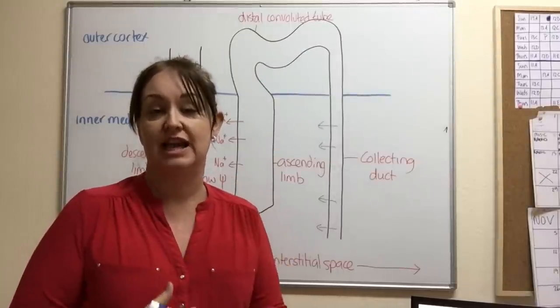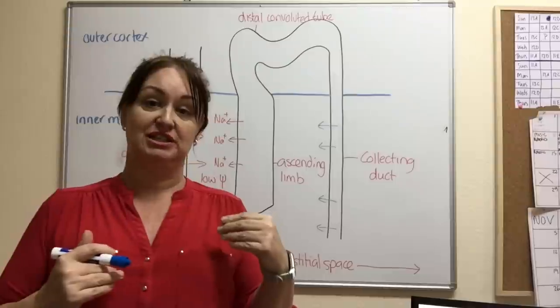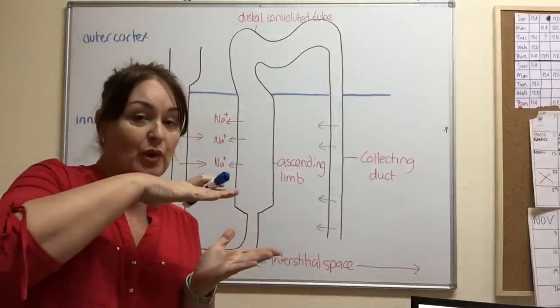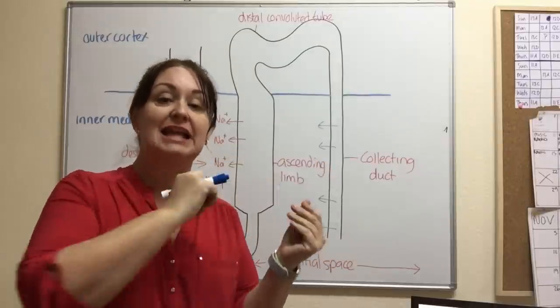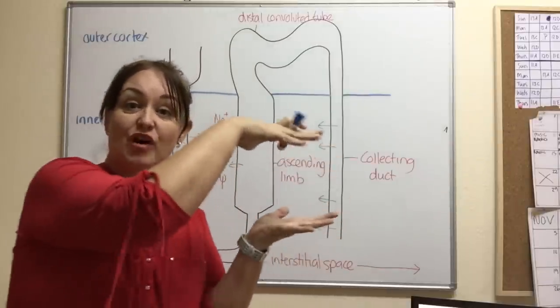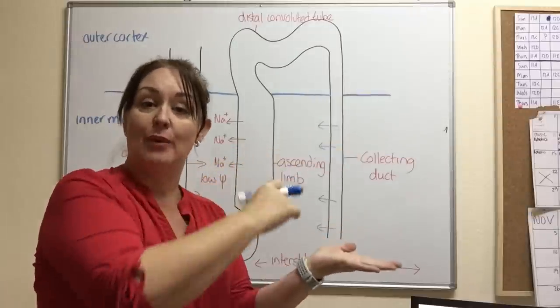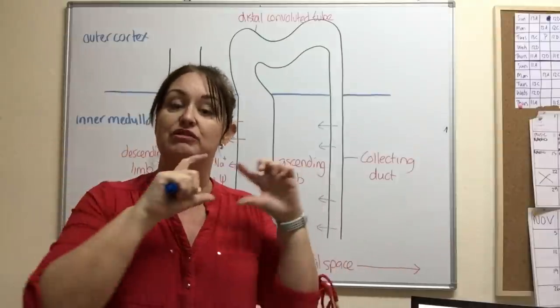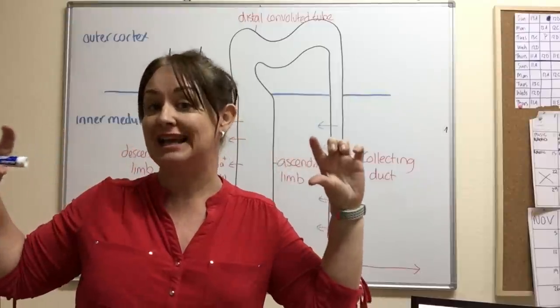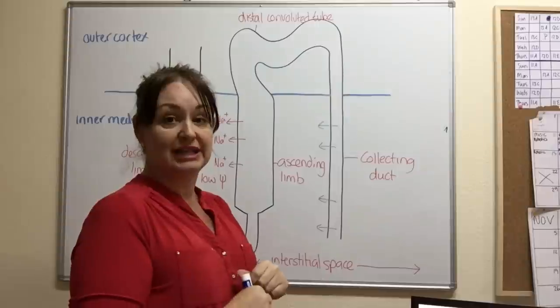What we're working towards here is something called the counter current system. And we've seen that before when we looked at fish gills. If two tubes were running in parallel and we had diffusion taking place, then what we end up with is a system where we've got 50%, 50%, it's in equilibrium. However, when we've got counter currents, when they're running opposite each other, remember that the concentration gradient is maintained along the whole length. And that is what we're working towards here.